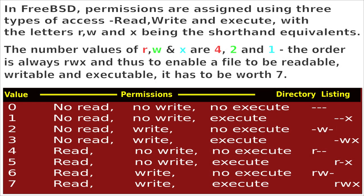In FreeBSD, permissions are assigned using three types of access: read, write, and execute, with the letters R, W, and X being the shorthand equivalents. The number values of R, W, and X are four, two, and one respectively. The order is always RWX, and thus to enable a file to be readable, writable, and executable it has to be worth seven.